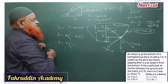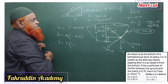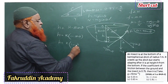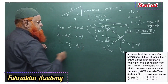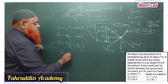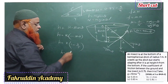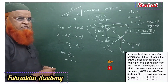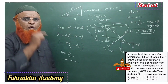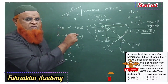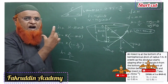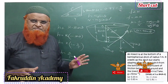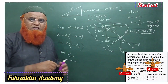cosθ = adjacent/hypotenuse = 4/5. So h = r(1 - 4/5) = r/5. Whatever value of r is given in the problem, substitute it here to get the height h.